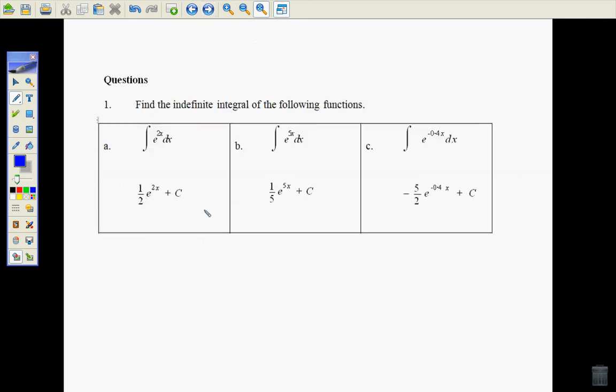e to the power of 2x, well that will equal a half. One over the a, because that's the ax. One over a, e to the 2x, so 2 becomes 1 over 2. e to the power of 5x will become 1 fifth e to the 5x. So because it's a 5 there, it becomes 1 fifth.